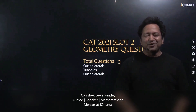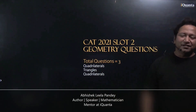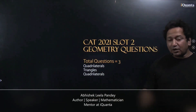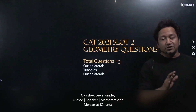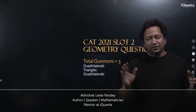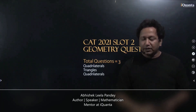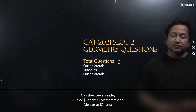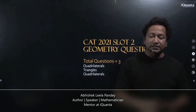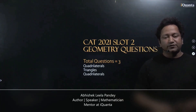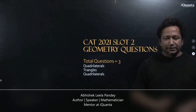Hello and welcome to iQuanta. Today I'll be discussing all the geometry questions from Slot 2 of CAT 2021. There were three questions of geometry, out of which two are from quadrilaterals and one was from triangles.